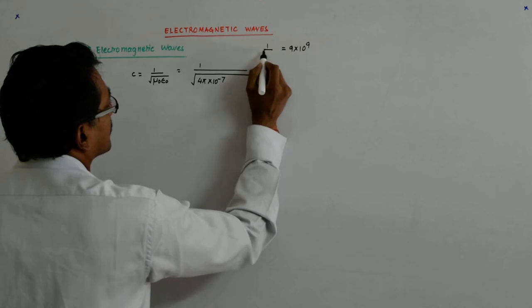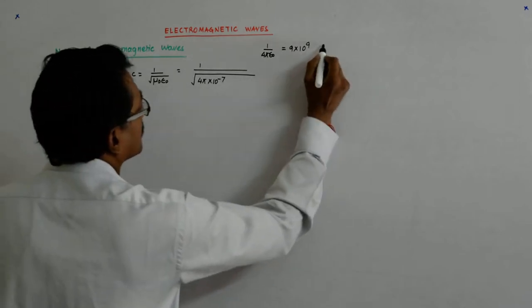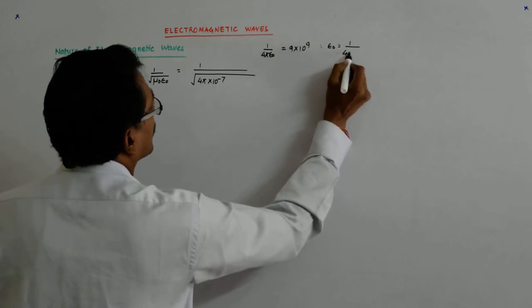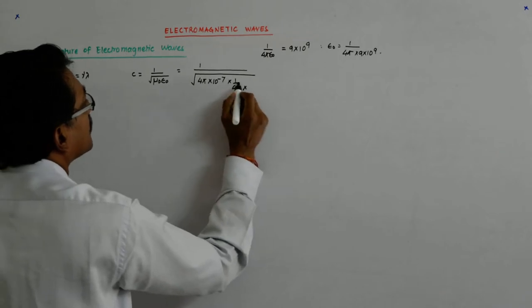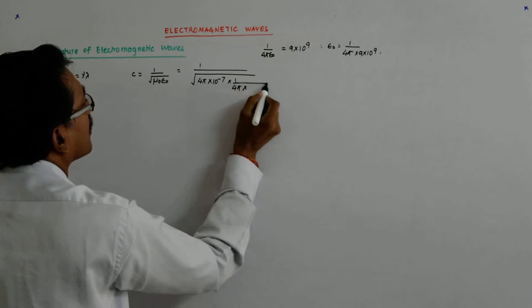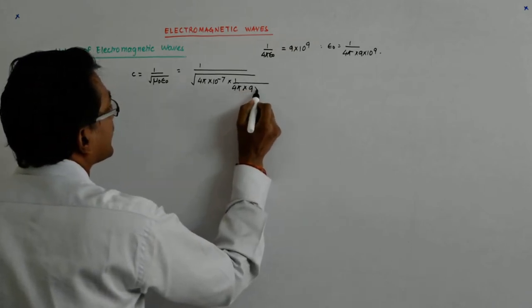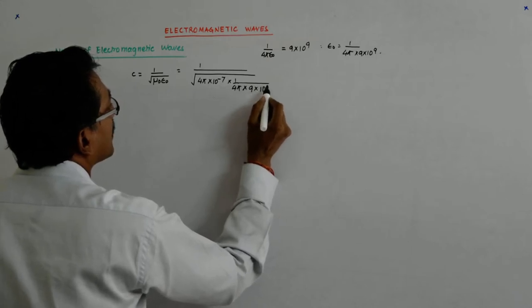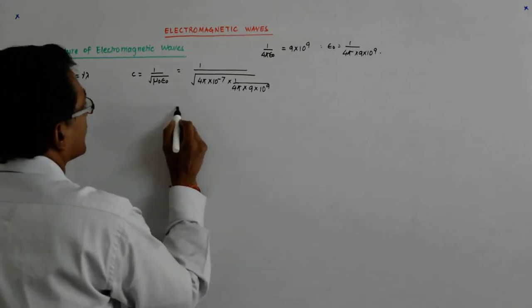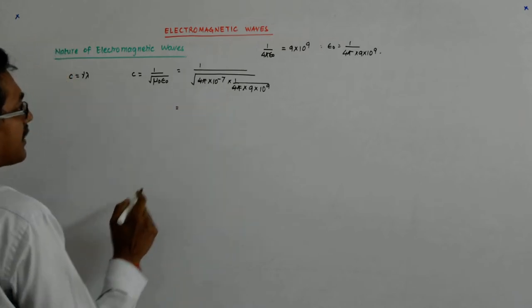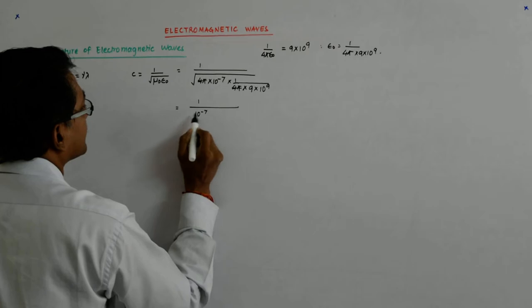Rather, 1 by 4 pi epsilon naught, correct. So what is epsilon naught equal to? Epsilon naught is equal to 1 upon 4 pi into 9 into 10 to the power 9. So it is into 1 upon 4 pi into 9 into 10 to the power 9. Now what is that equal to? This cancels and you get...